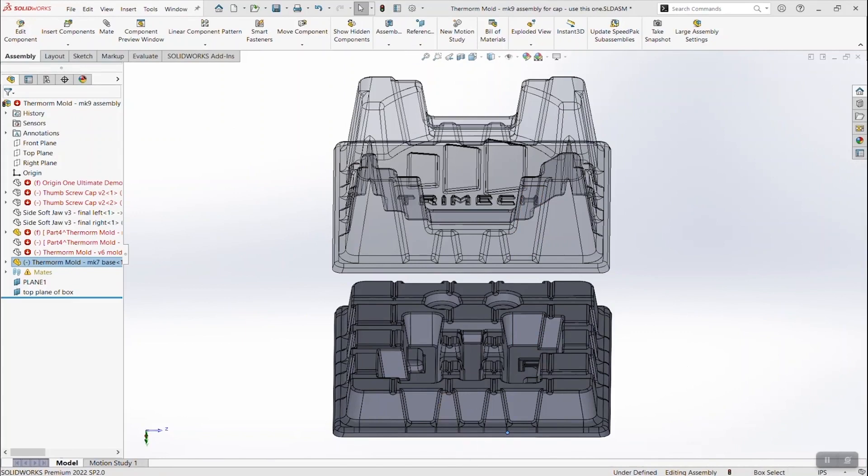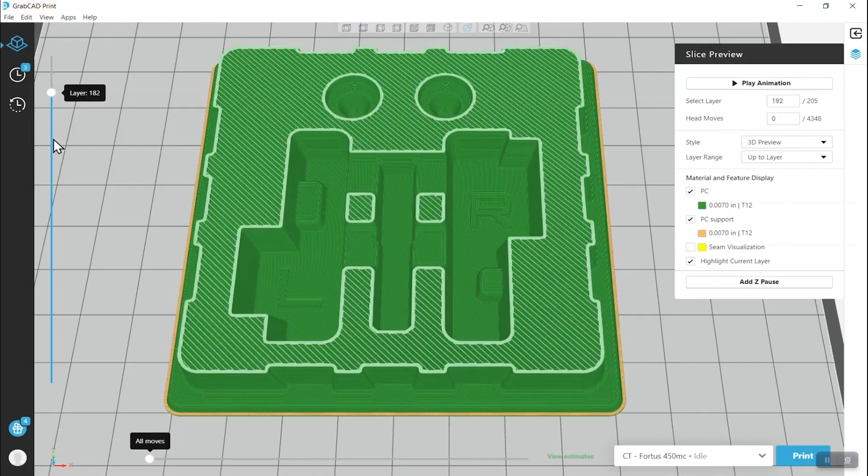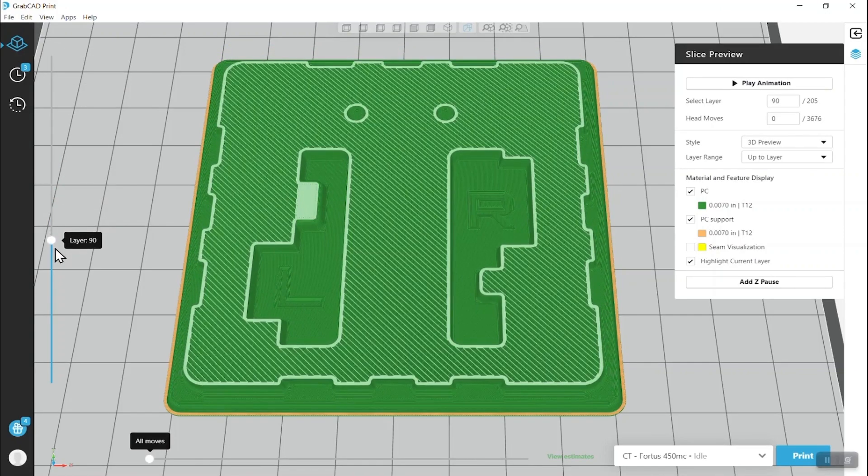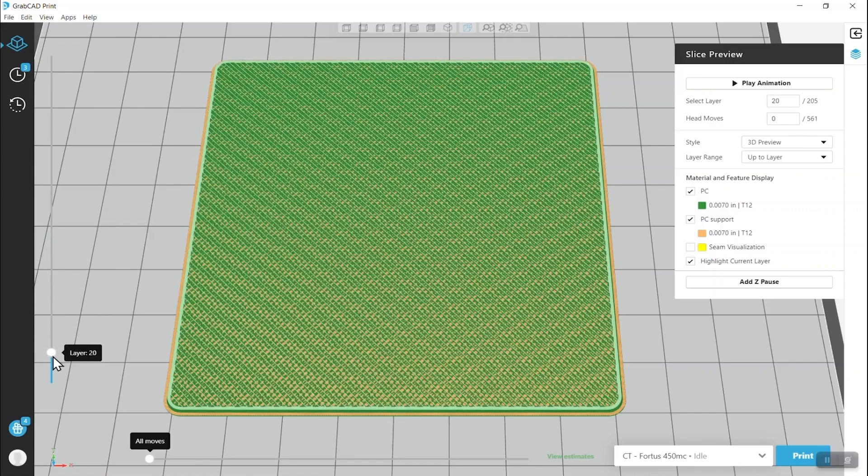Coming over to GrabCAD Print, you can see that our mold looks perfect. It's going to print exactly how we're seeing it on the screen, and as we scroll through the part, you can see we've actually given it a sparse low-density infill to get great vacuum. Now, with that said, we can get even better vacuum by using our Insight software, which is part of GrabCAD Print.